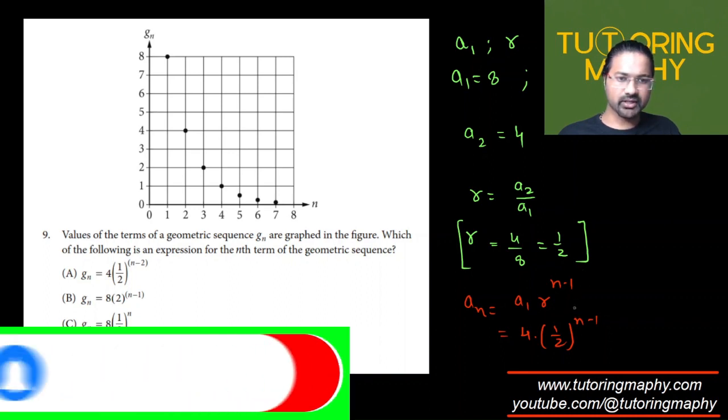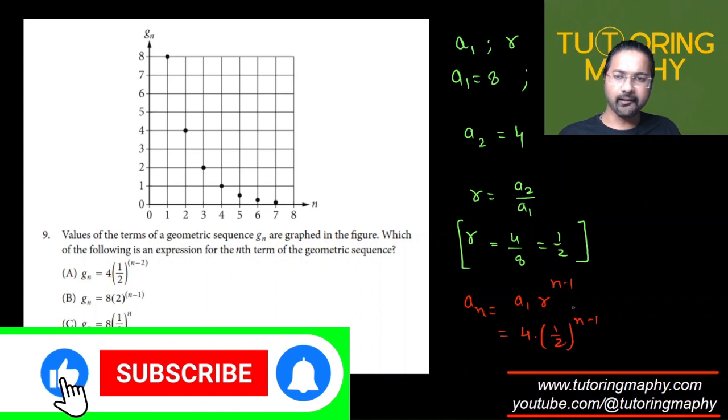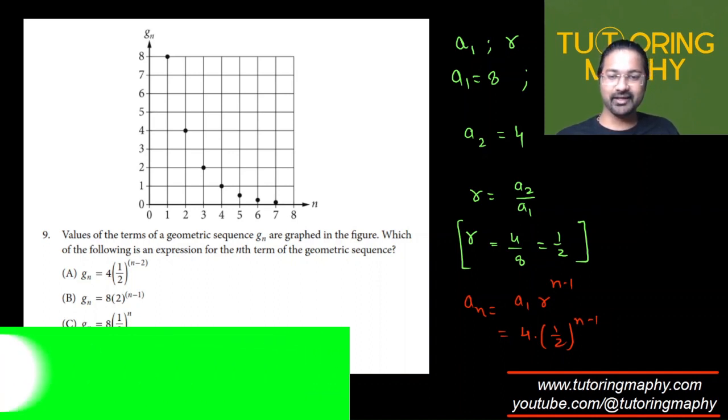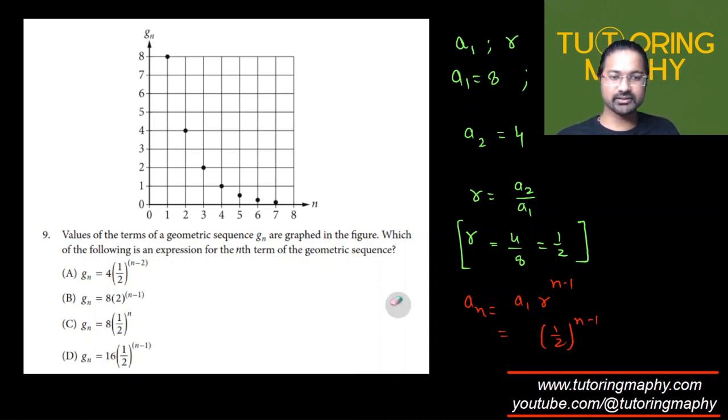Made a mistake here, a is not 4, a is 8. That's why I was just getting a little confused. So it's 8 times 1 over 2 raised to n minus 1, which is obviously not anywhere in the options. So this can be rewritten as 8 can be written as 4 times 2.